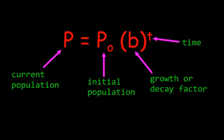All right, so in this equation you see in front of here, we have P equals P₀, that is what they call that little zero, P₀, bracket b, bracket exponent t. Now, what is all this stuff?